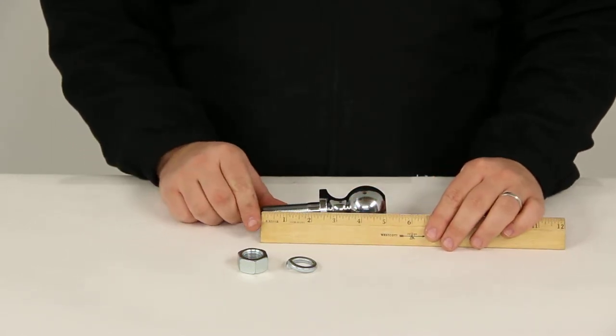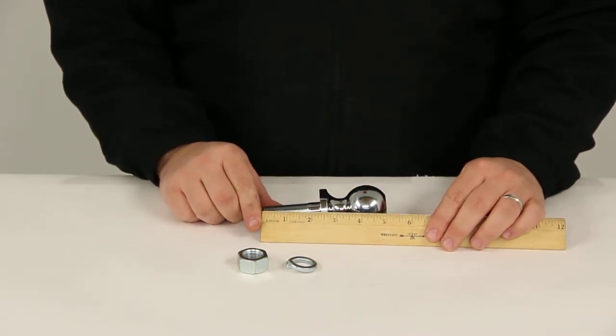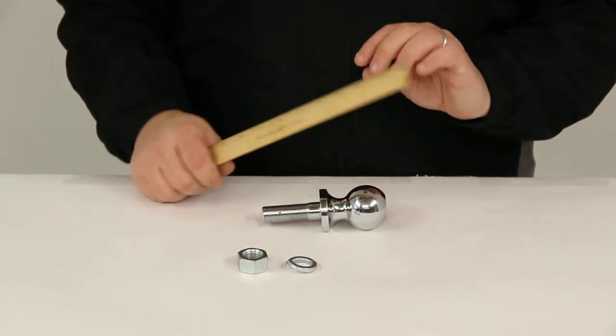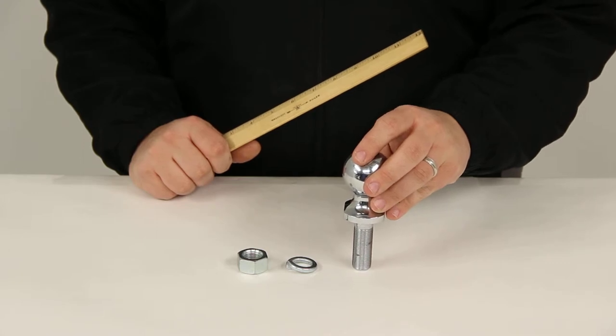Our shank length is going to measure 2 and 3/8 of an inch, and this is designed to fit draw bar thicknesses of 3/8 of an inch to 1 and 1/4 inches.